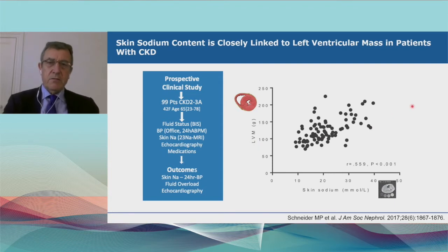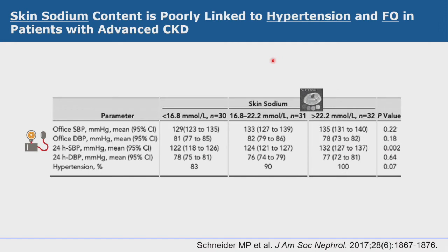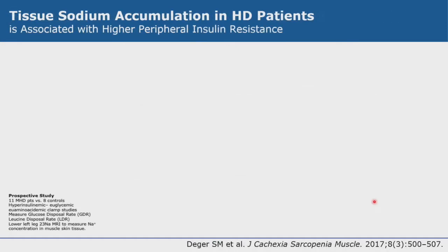Three key studies on tissue sodium: first, a study in nearly 100 advanced kidney disease patients correlated left ventricular mass measured by MRI with skin sodium content measured by sodium MRI. There is a nice linear relationship between sodium content accumulation and left ventricular mass — and interestingly, this is not linked to blood pressure. Most patients are hypertensive but controlled, and what drives left ventricular hypertrophy is the sodium content, from low to high.